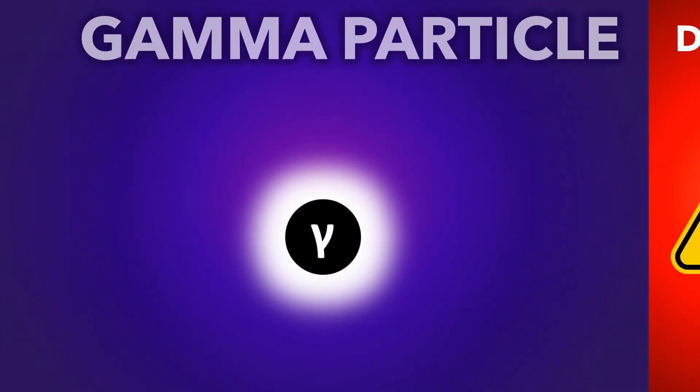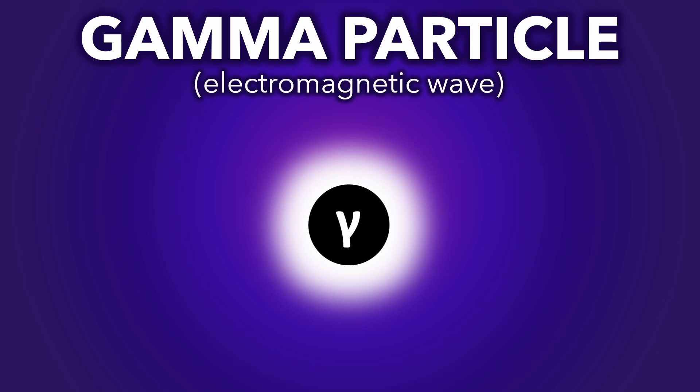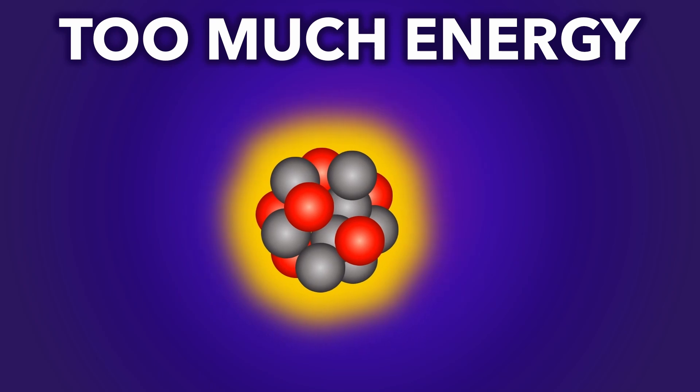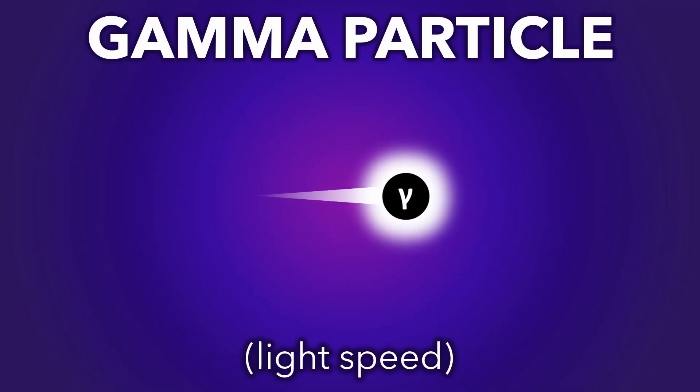Finally, a gamma particle, the highest energy electromagnetic wave or photon, which is massless and chargeless. When a nucleus has too much energy, it releases a gamma ray to get rid of it.